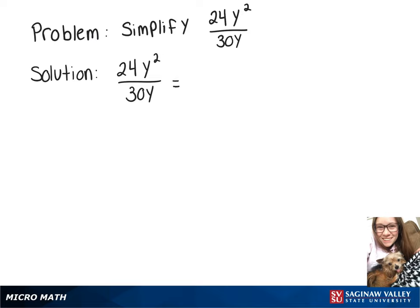So I can rewrite 24 as 6 times 4, and then I also want to break up that y squared, so I'm going to rewrite that as y times y.